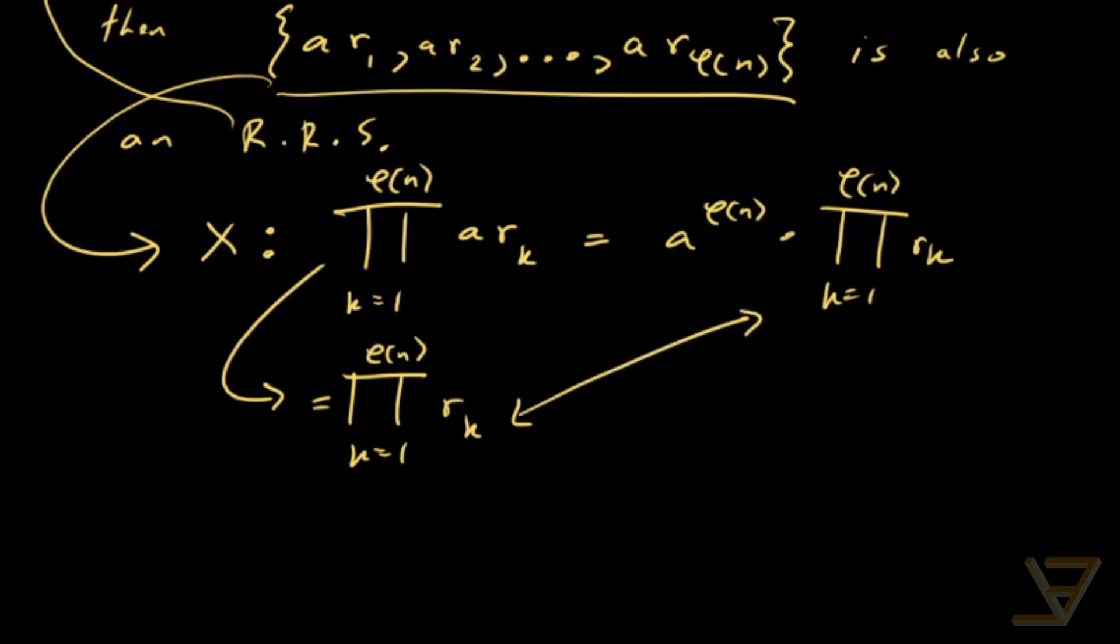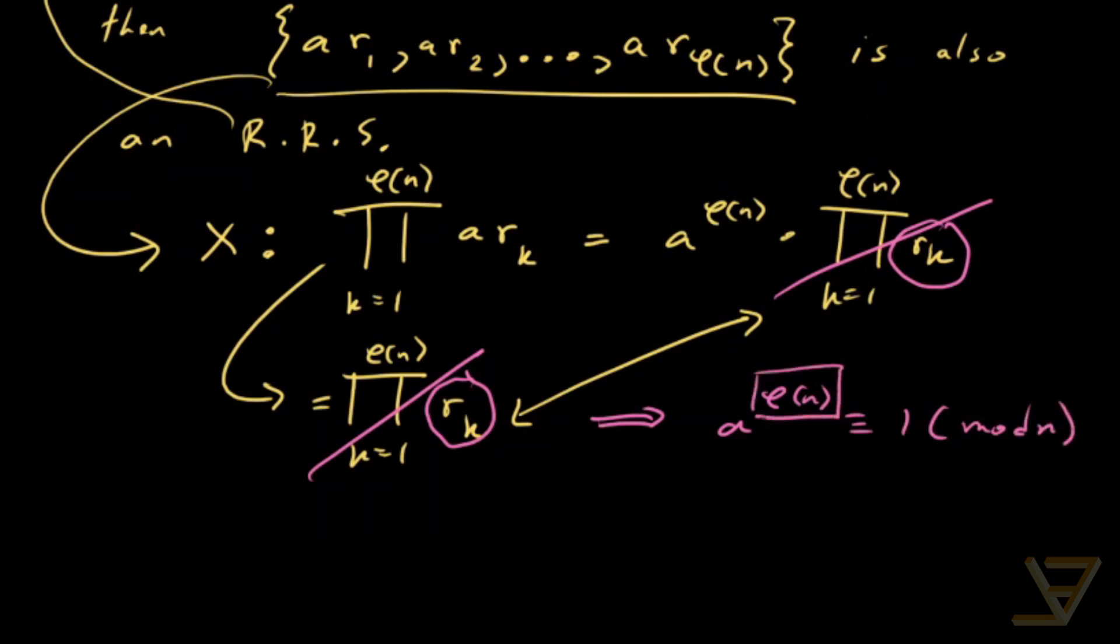Because all these r k's are coprime to n, we can cancel out this product from both sides. And what we get is that a to the phi of n is congruent to 1 mod n. So our desired m is phi of n, m equals phi of n.